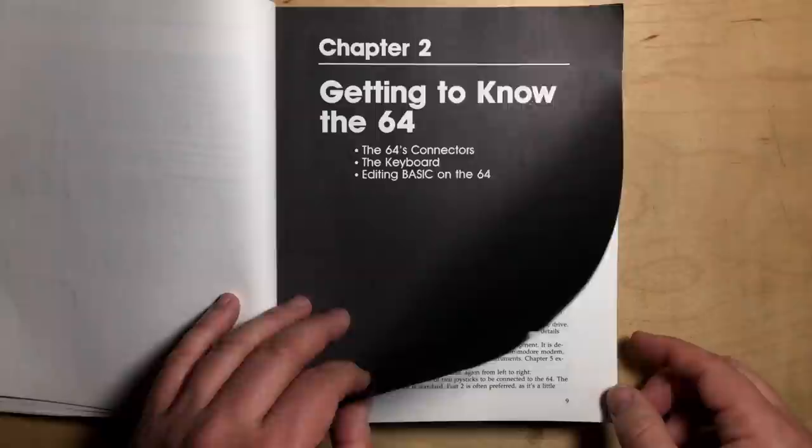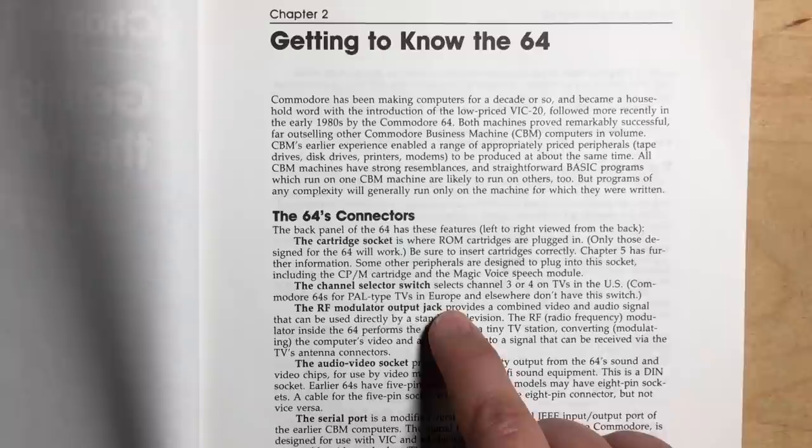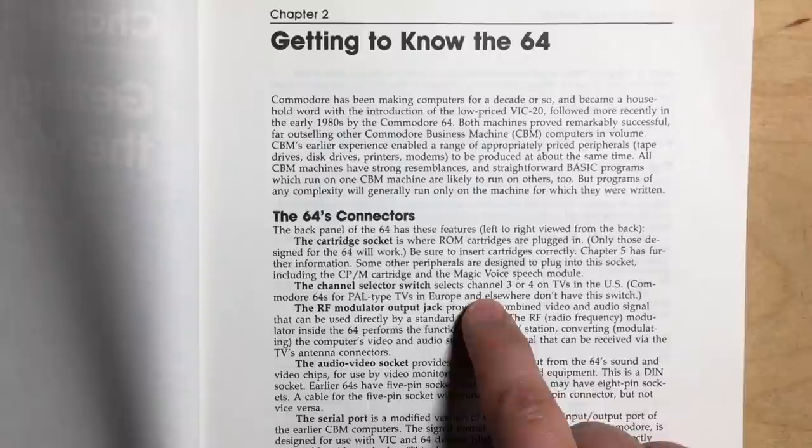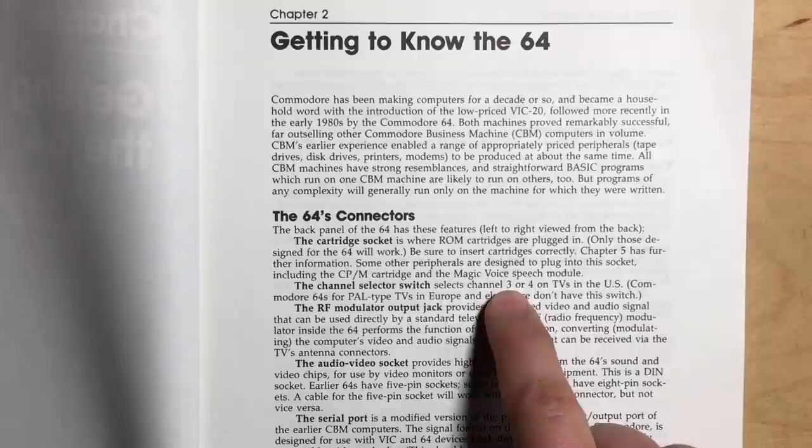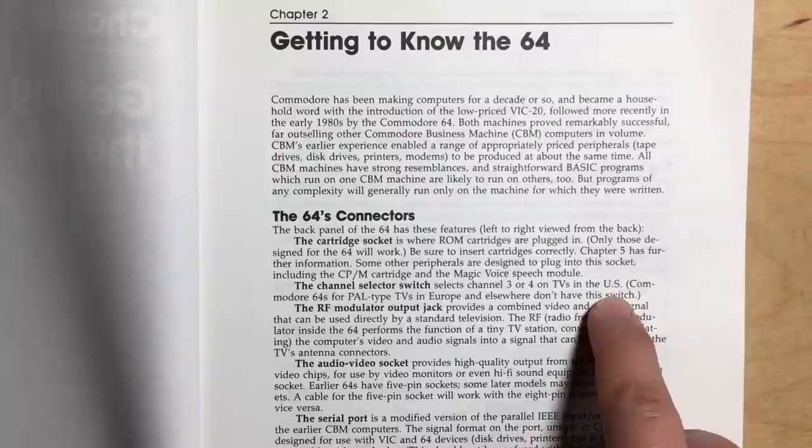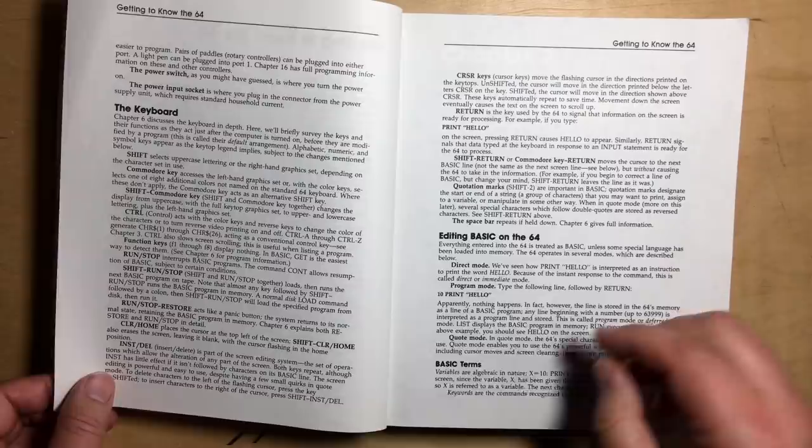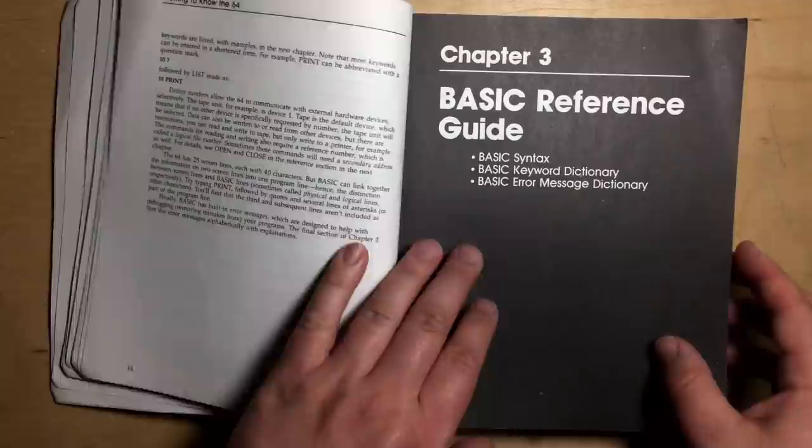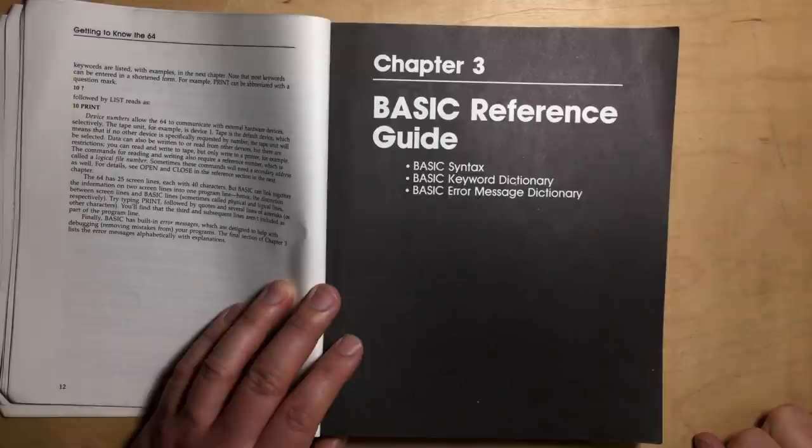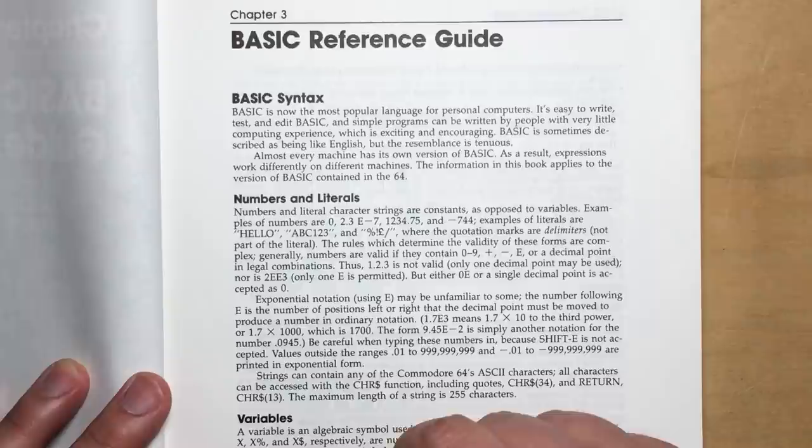Getting to know the 64. The 64's connectors. Despite being written and published in the U.S., does a pretty good job of being international. For example, he points out that the NTSC machines have a channel selector switch to choose between three or four, although he only says in the U.S. I would have appreciated a mention of Canada there too. Commodore 64s for PAL type TVs in Europe and elsewhere don't have the switch. And goes through the keyboard, basic terms. So some chapters are quite short, and some are extremely long, like chapter three.